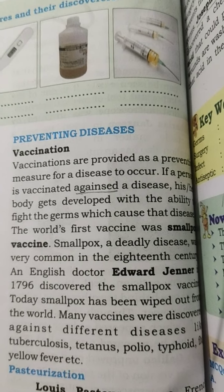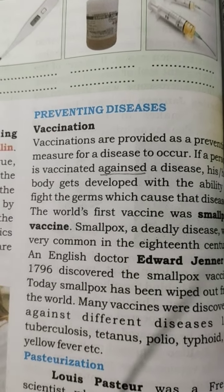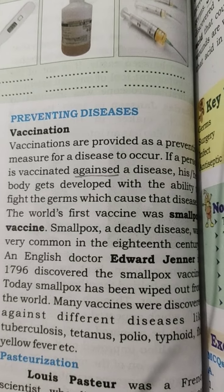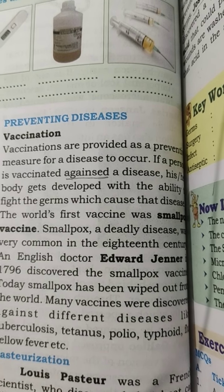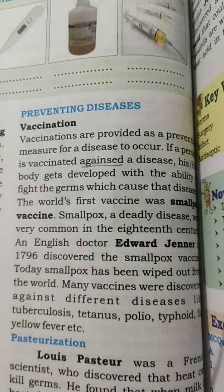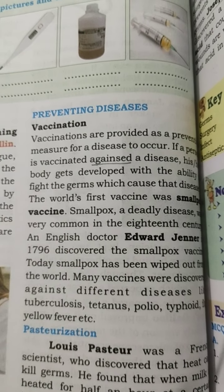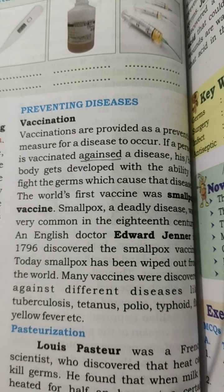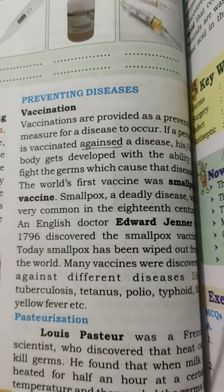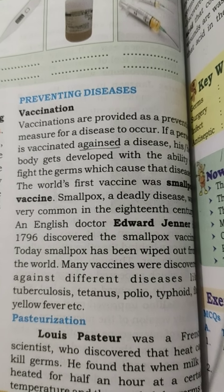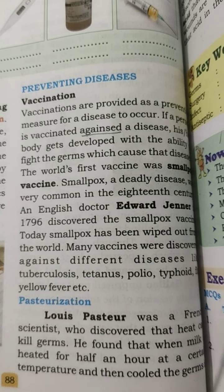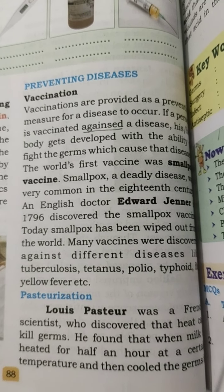The world's first vaccine was the smallpox vaccine. Smallpox, a deadly disease, was very common in the 18th century. An English doctor, Edward Jenner, in 1796, discovered the smallpox vaccine. Today, smallpox has been wiped out from the world.